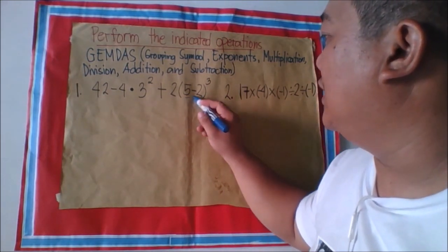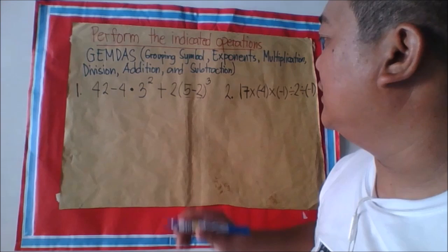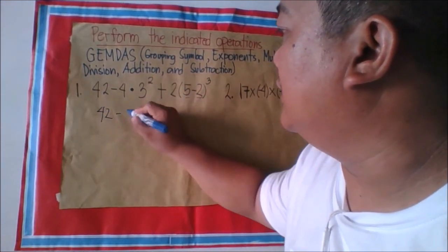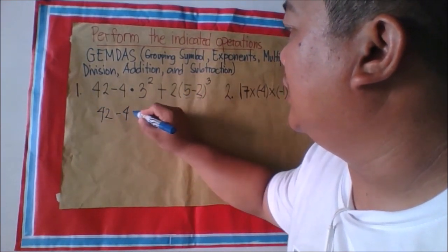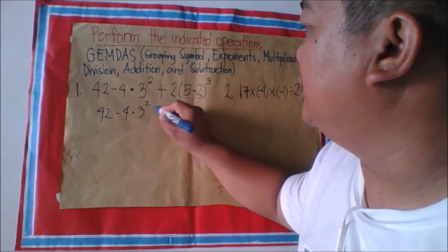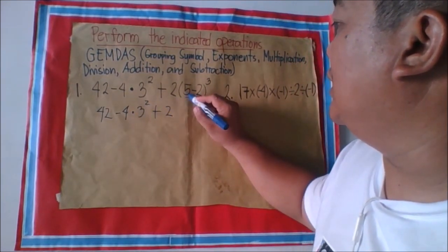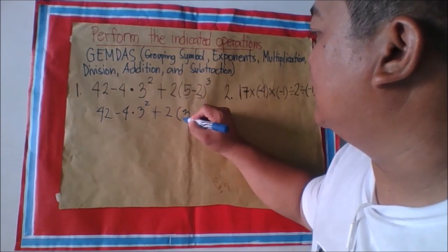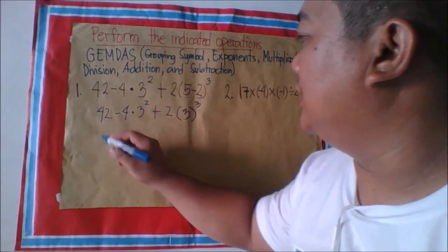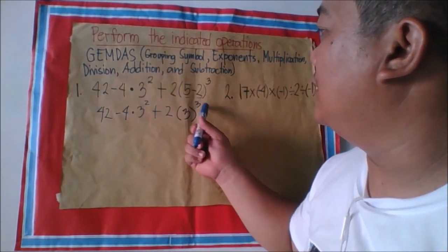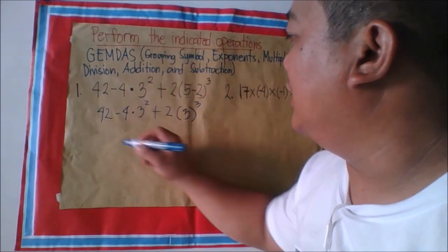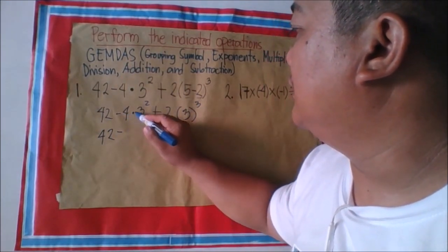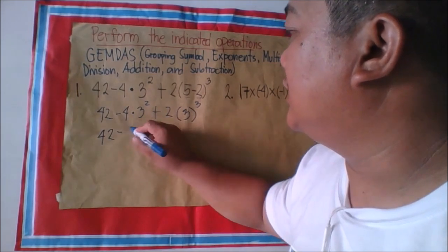So first, we evaluate the grouping symbols. That gives us 42 minus 4 times 3 to the power of 2, plus 2. Then 5 minus 2 equals 3. Next, we are going to evaluate that exponent — 3 to the power of 2.